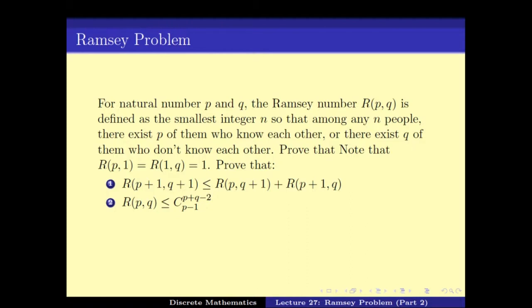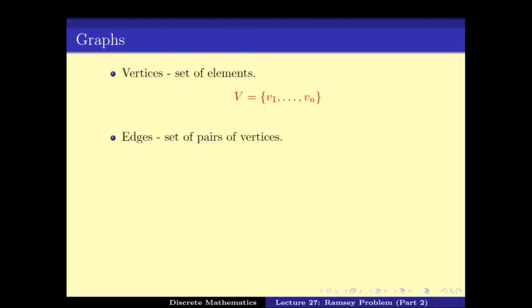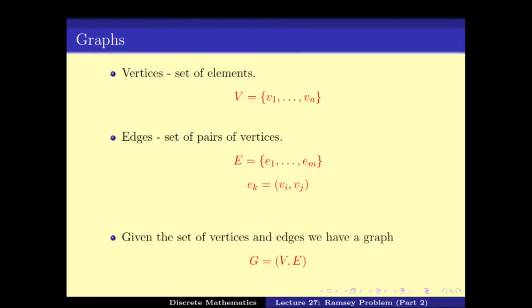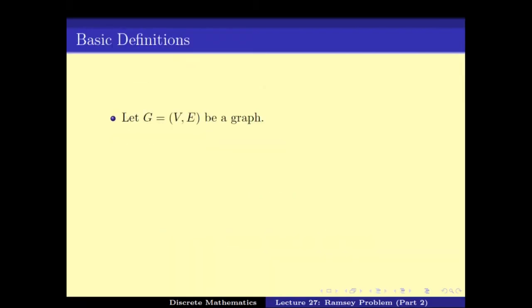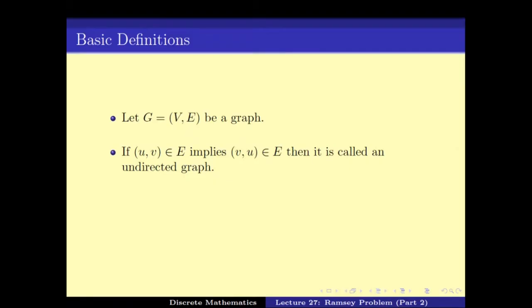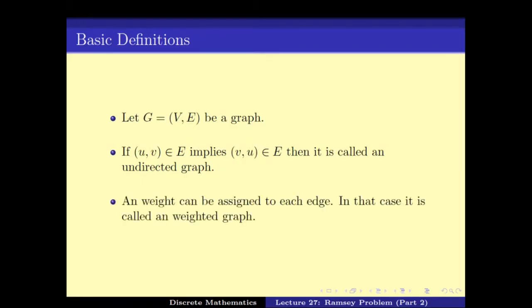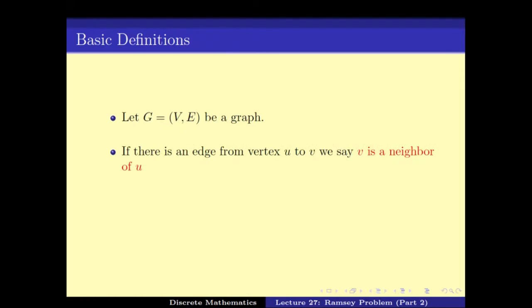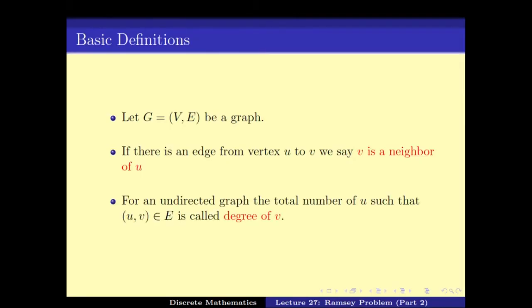We did this in the last video, so let us quickly recap. A graph is given as a set of vertices and a set of edges. If the relation between vertices is symmetric — that is, if edge (u,v) exists then edge (v,u) exists — we call it an undirected graph.